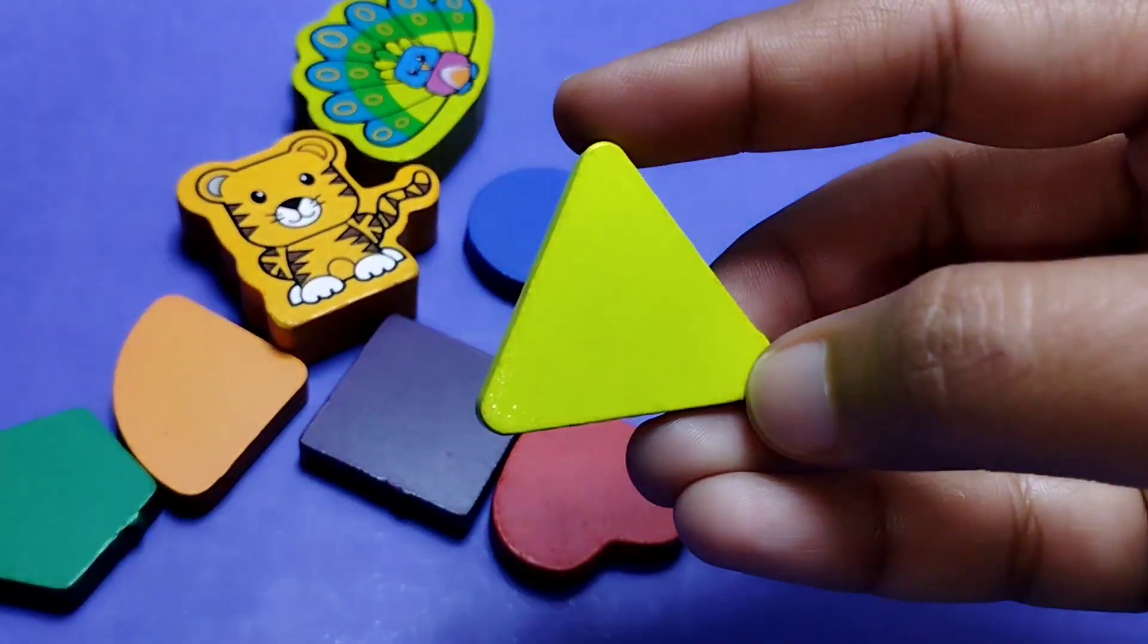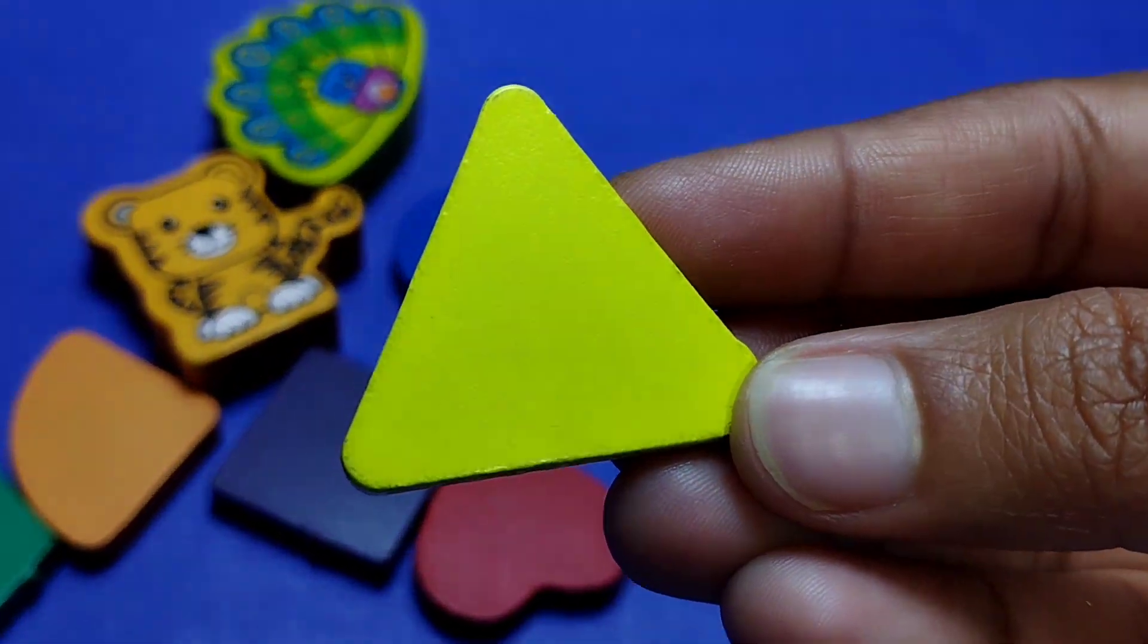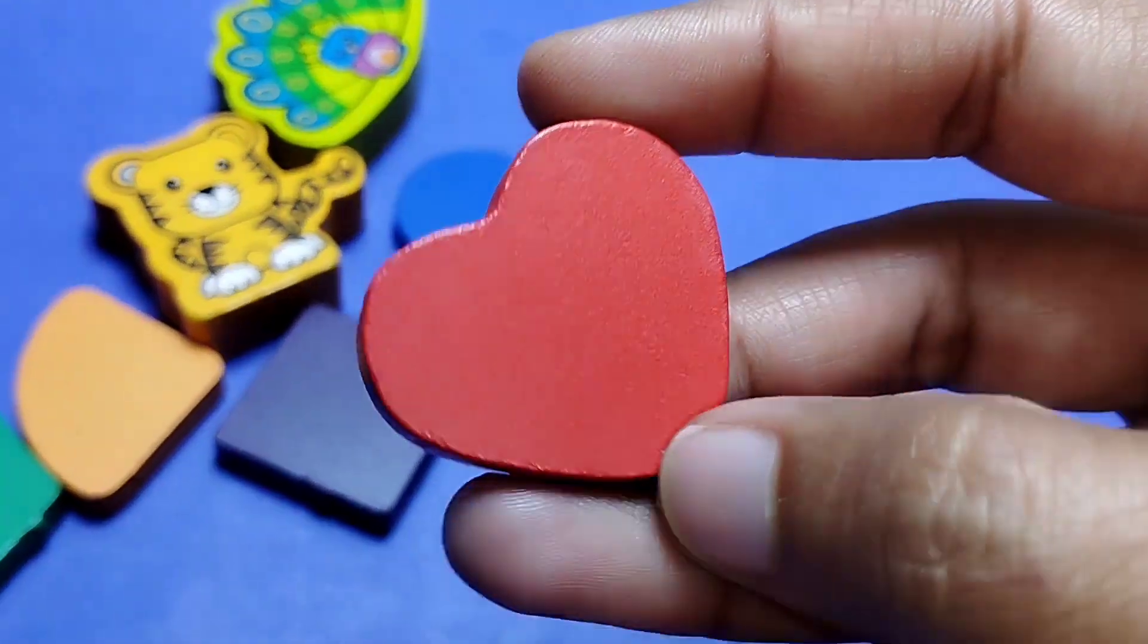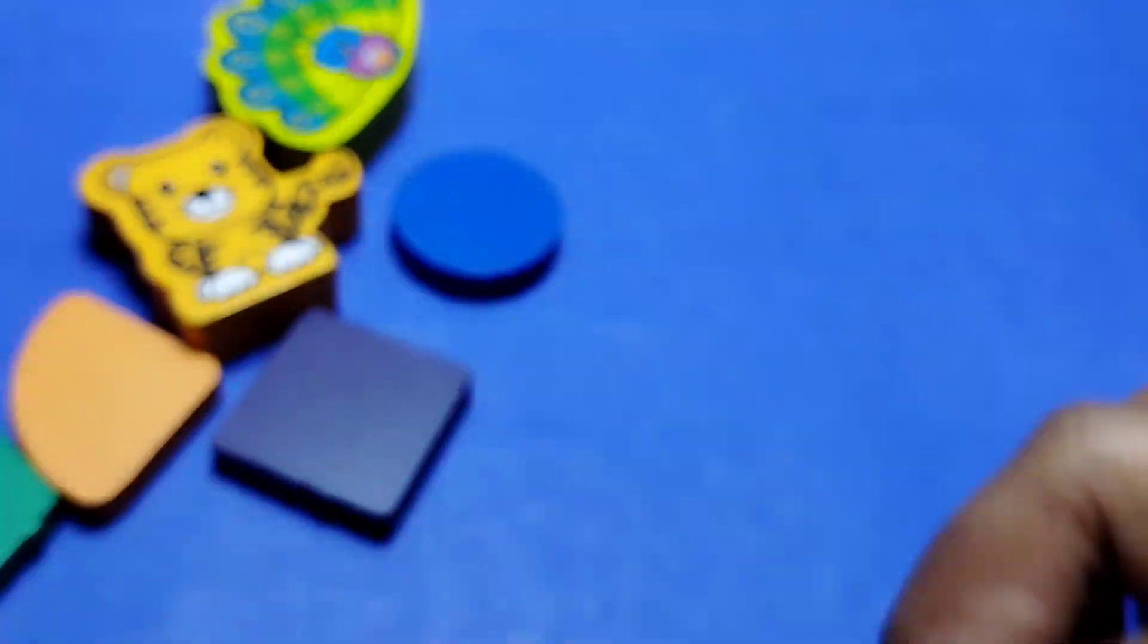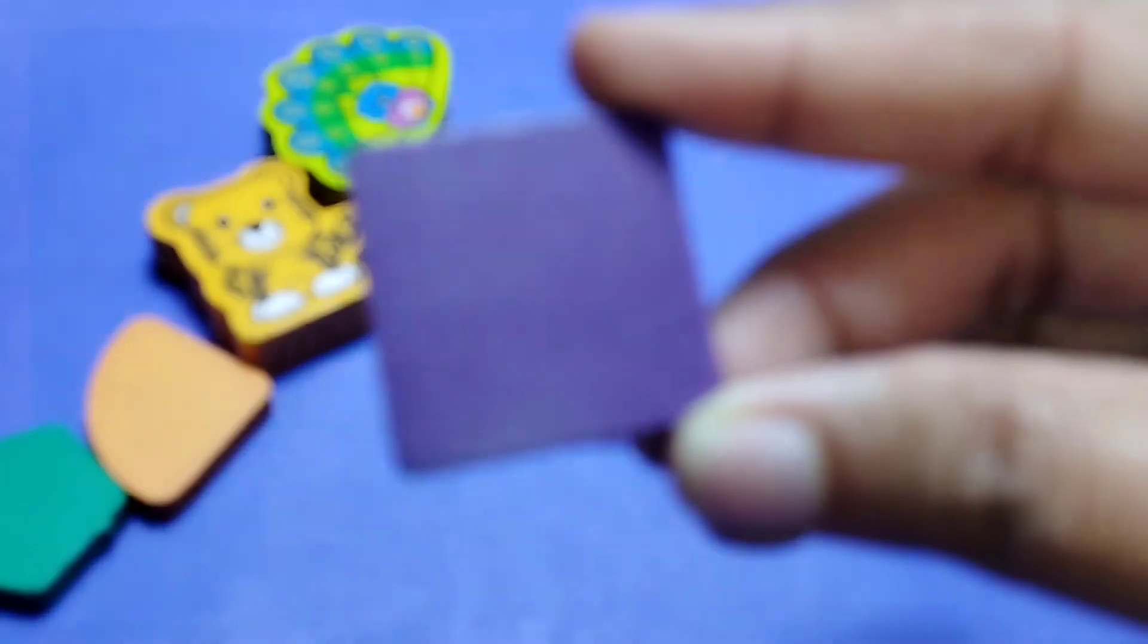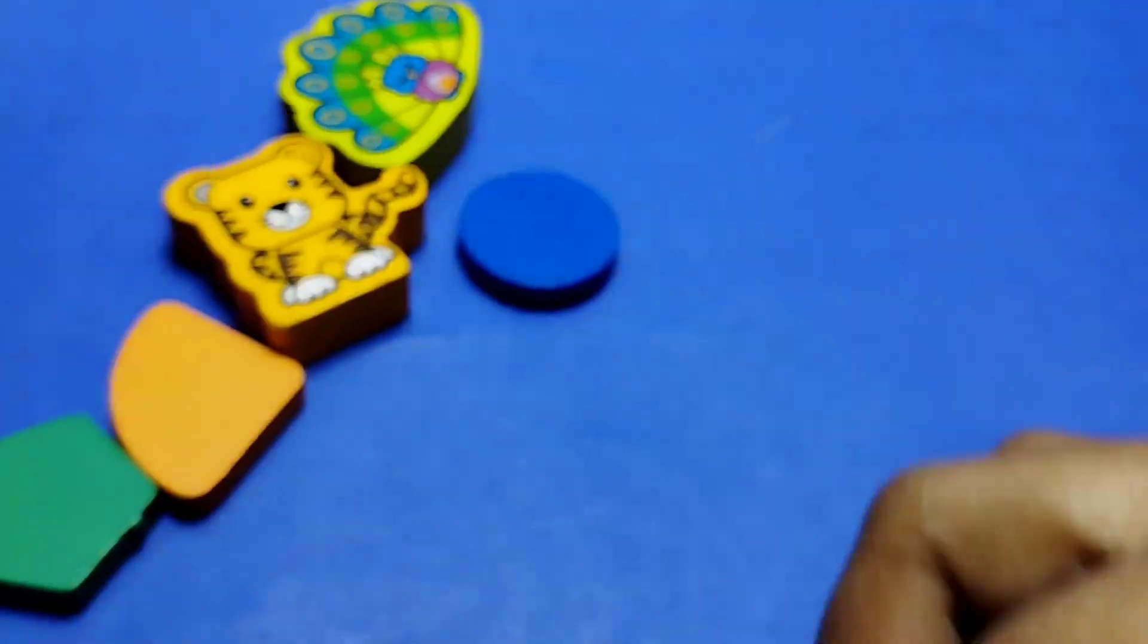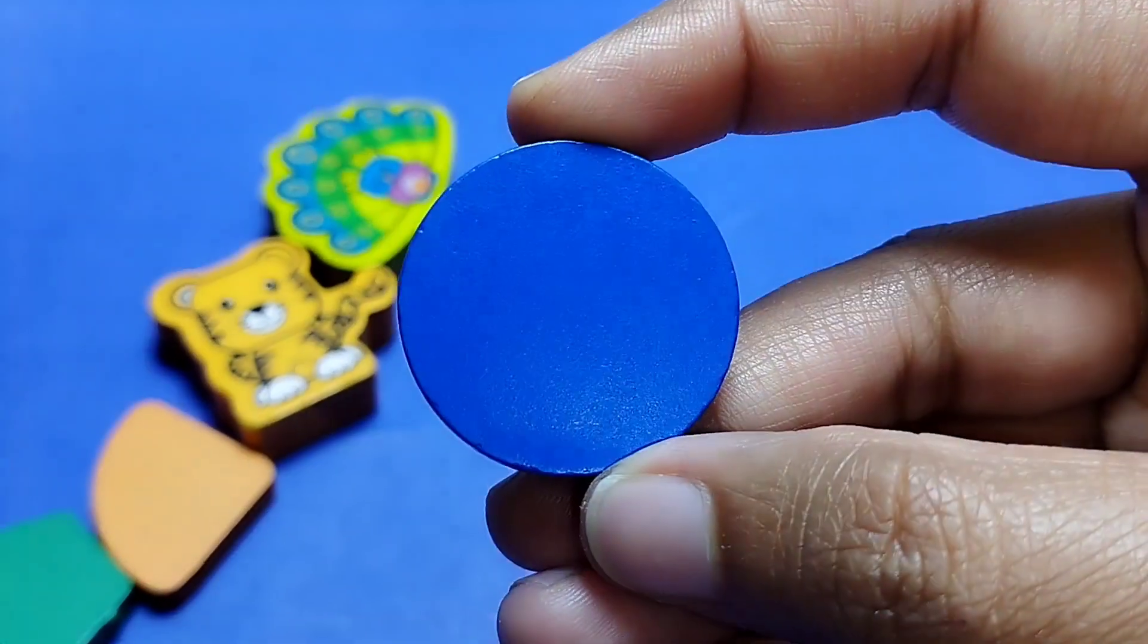Let's learn some shape names. Triangle. Heart. This is heart shape. Square. This is square shape. Circle. Bye-bye.